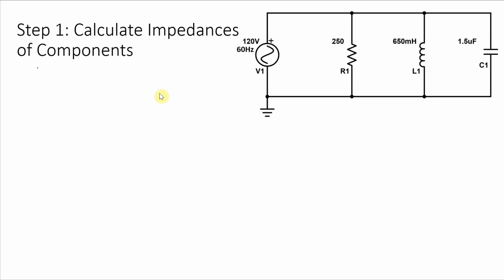First thing to do is to calculate the impedances of the components. The impedance of the resistor is a very easy one — there is no calculation to do. It's 250 ohms. Resistance never changes, and since it's a resistor, the phase angle is zero degrees.